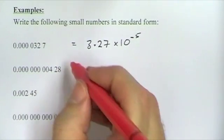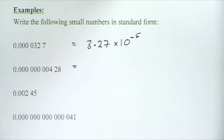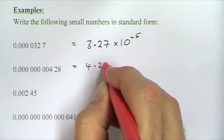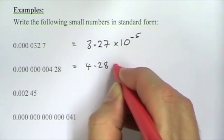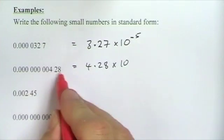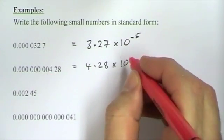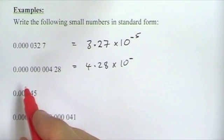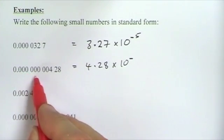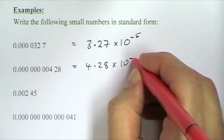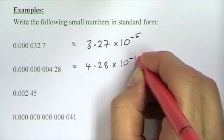The next example: the number part between 1 and 10 is 4.28. We know it's going to be divided by 10 because it's a number much smaller than 1, so it's to the minus power. The decimal point has moved a total of 10 places, so it's 4.28 times 10 to the minus 10.